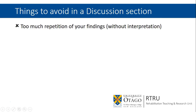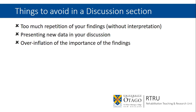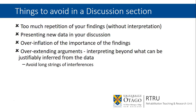Things to avoid in the discussion section: avoid repeating too much of your findings without interpretation — don't just repeat verbatim, you want to take things further. Avoid presenting new data in your discussion; if you feel like you want to present data not in your results section, go back and revise your results section rather than add it to the discussion. Avoid over-inflating the importance of your findings. As a scientist, you need to be appropriately conservative in terms of how far you can develop arguments from your data. Similarly, avoid overextending your arguments — don't interpret beyond what can be justifiably inferred from the data.